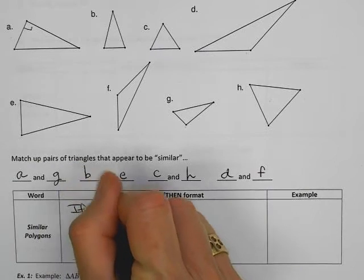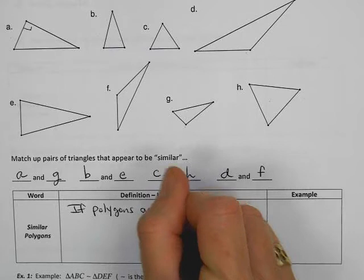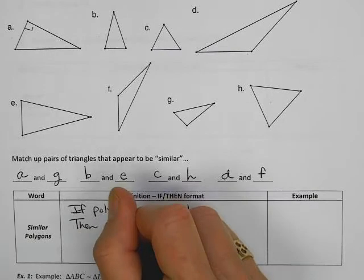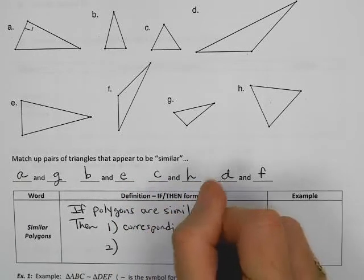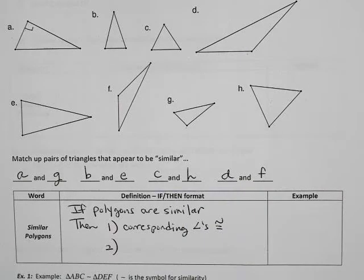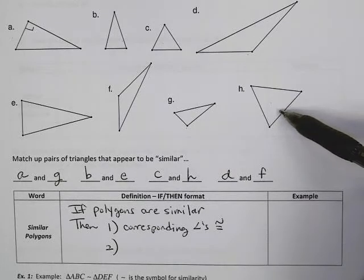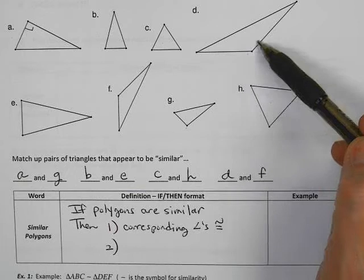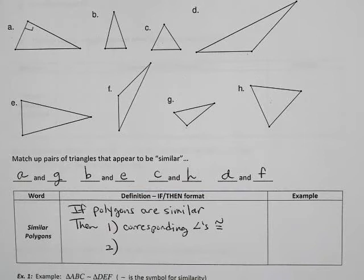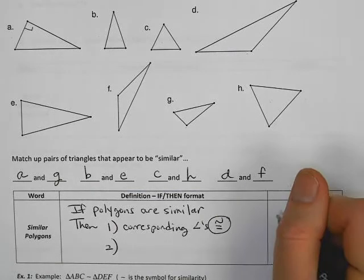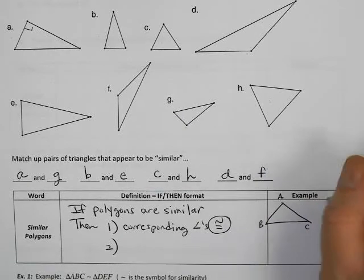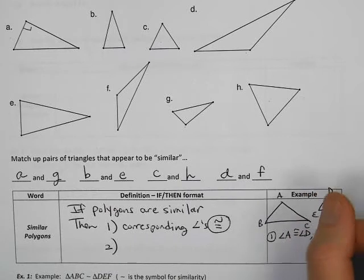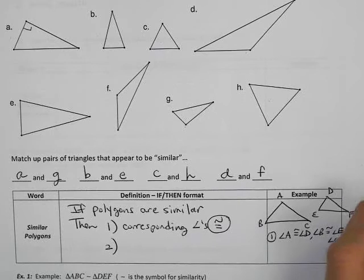We're going to say if polygons, doesn't have to be triangles, are similar, then two things are true. The first one you should notice, if you look above, is that corresponding angles are congruent. So we never change the angle measure. It's perhaps easiest to see if you look at the equilateral pair. Equilateral triangles are also equiangular. All these angles are 60, well, they would also be 60 down here. Or if you look at the obtuse triangle, this angle measure appears to be the same as this angle measure. The sides are not the same, but the angle measures are congruent.